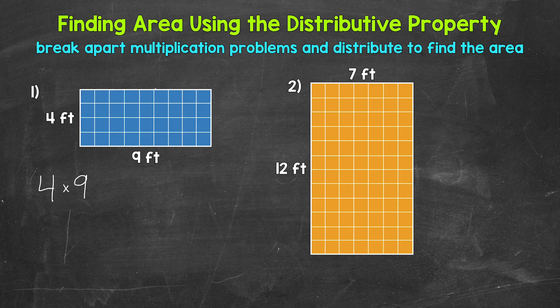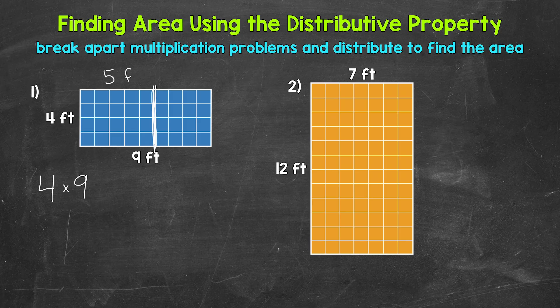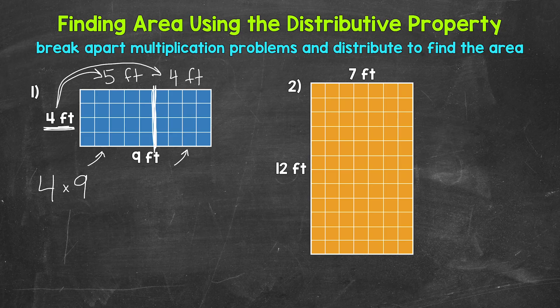One thing we can do here is break apart our multiplication problem into simpler numbers to work with. We can break apart 4 feet or 9 feet — let's do 9 feet. We can break this apart into 6 and 3, 7 and 2, 5 and 4 — whatever we want, as long as it adds up to 9. Let's do 5 and 4. So I'm going to split 9 feet into 5 feet and 4 feet, splitting this rectangle into two parts: 5 feet and 4 feet. Basically, we're going to find the area of each part and then add those together to find the total area of the rectangle. We're going to distribute this side length, 4 feet, to this 5 feet and this 4 feet.